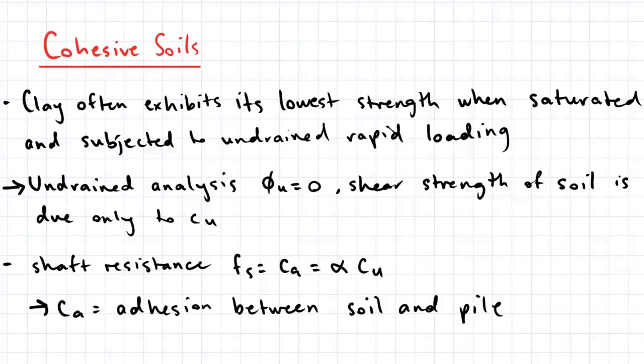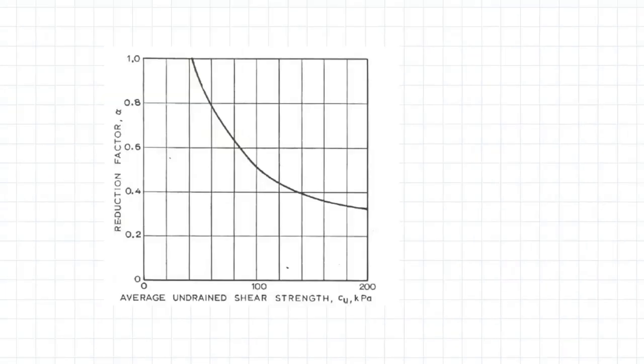The shaft resistance Fs is equal to Ca, which is equal to alpha multiplied by Cu. Ca is the adhesion between the soil and the pile. So once you know Cu, you can then use this graph to find alpha. You can then multiply these two values together to get a value for Ca.